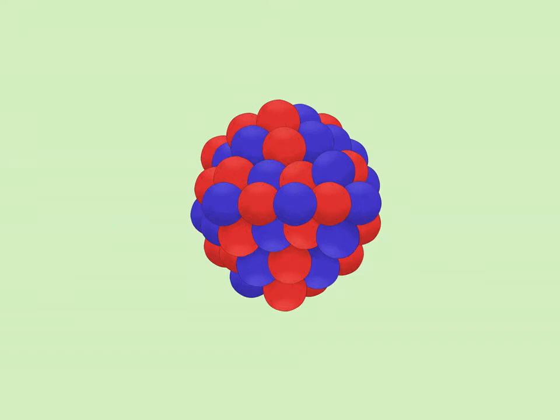Glue the protons and neutrons together. Glue both colored craft balls into a ball, alternating between the protons and neutrons as you glue. This will resemble the nucleus.